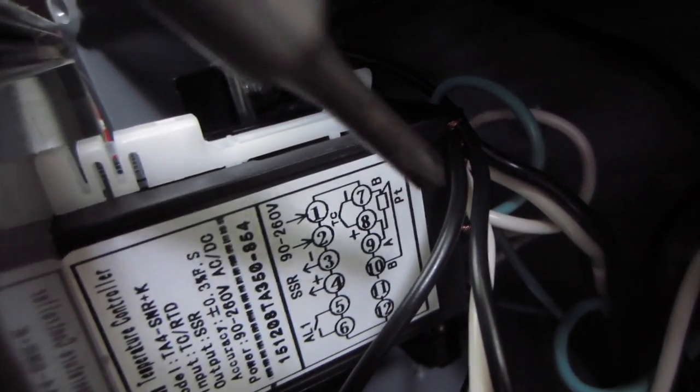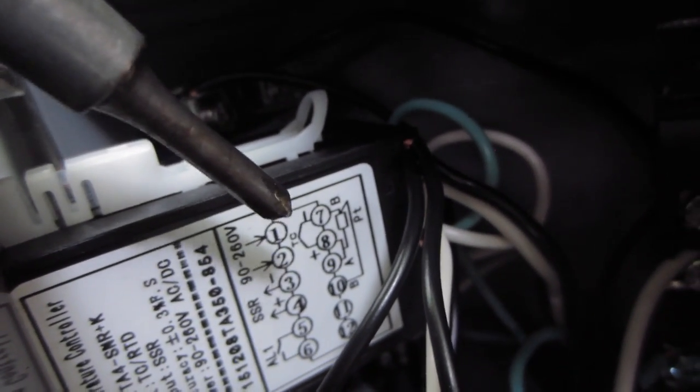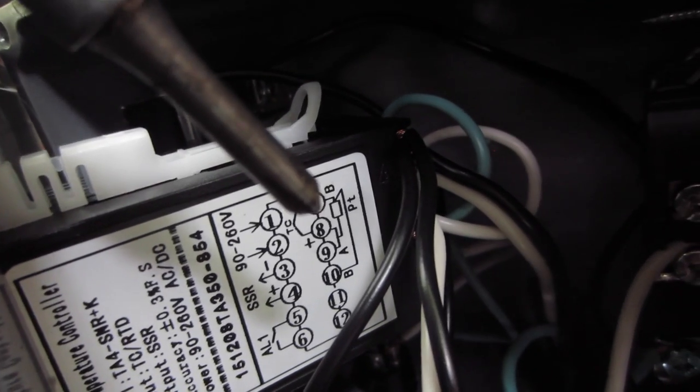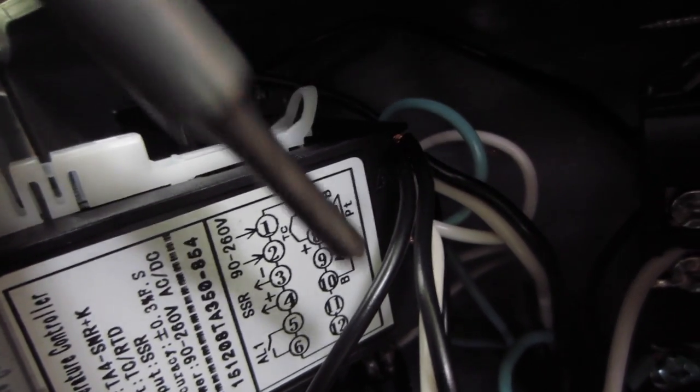Let's see, they're on a little schematic. Seven is out to the temperature probe. Eight and nine are jumpered, and then go out to the temperature probe. Ten goes out to the temperature probe.